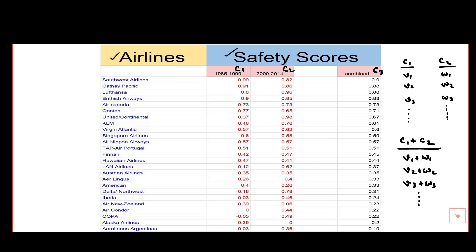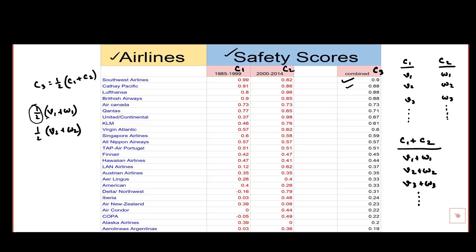What does C3 represent? C3 represents the average of C1 and C2. So C3 is half of (V1 plus W1) in the first row, and half of (V2 plus W2) in the second row. This is scalar multiplication — half is the scalar, and we are multiplying it with the entries V1 plus W1 and V2 plus W2 respectively.